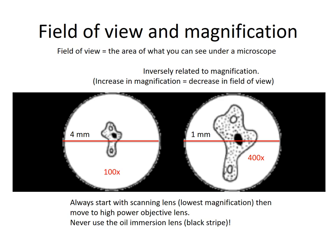In this lab, we're never going to use the oil immersion lens — that is the objective lens with the black stripe. If we do use that lens, it's going to damage the slides. So please avoid using it.